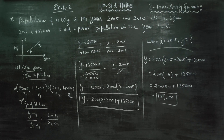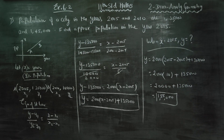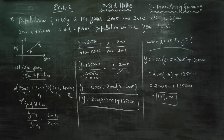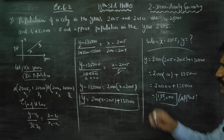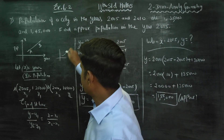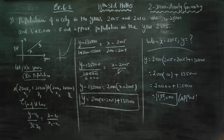This assumes the growth of the population is constant — that is, it is linear, the equation of a straight line. In general, population growth is exponential — an exponential graph of the form e^x — which gives a curve, not a straight line. That is why the actual population growth is a curve, but here we use the linear approximation to get the approximate population. Thank you.